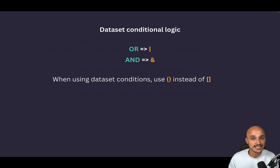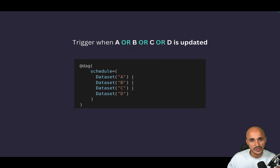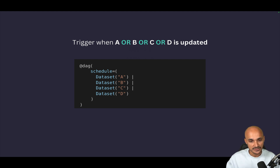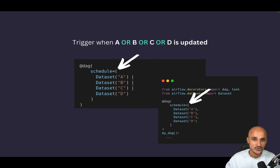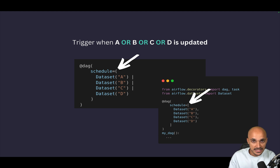Now you can with dataset conditional logic — specifically, with two new operators: OR (pipe) and AND. For example, to trigger your DAG when dataset A, B, C, or D is updated, you use the schedule parameter, define your datasets in parentheses, and use the pipe operator. Keep in mind that you must use parentheses, not square brackets as before. Whenever you use the AND or pipe operators, you must use parentheses, otherwise it won't work.